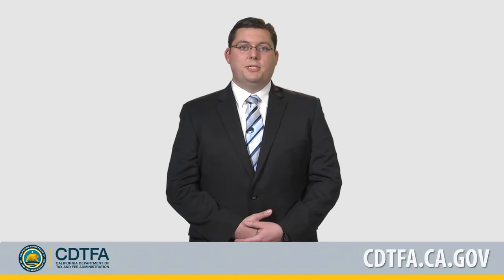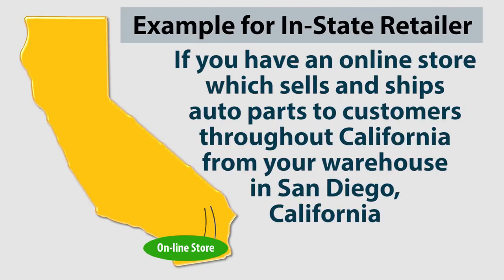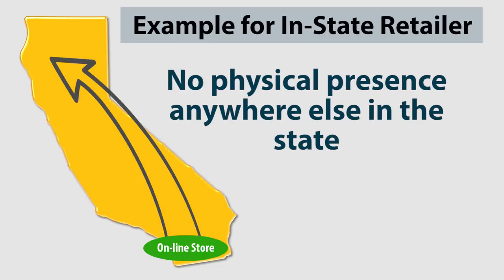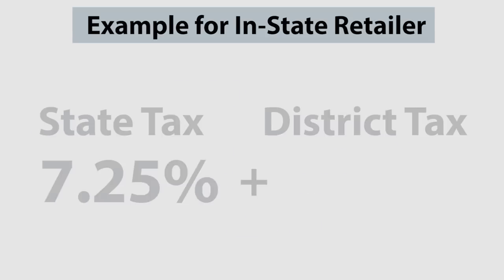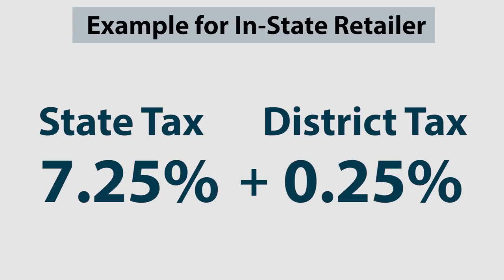If you are an in-state retailer, the same rules apply. Here's how it works: if you have an online store which sells and ships auto parts to customers throughout California from your warehouse in San Diego, California, and have no physical presence anywhere else in the state, beginning April 1, 2019, if your sales in the prior year exceeded the $500,000 threshold, in addition to the statewide tax of 7.25%, you are also required to collect the district tax based on your customer's location on all retail sales in California.